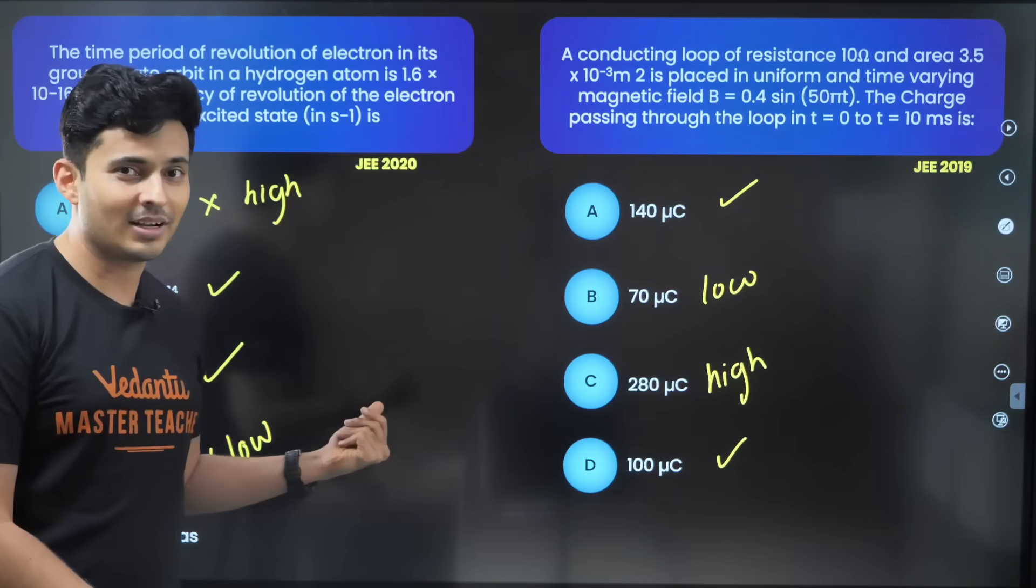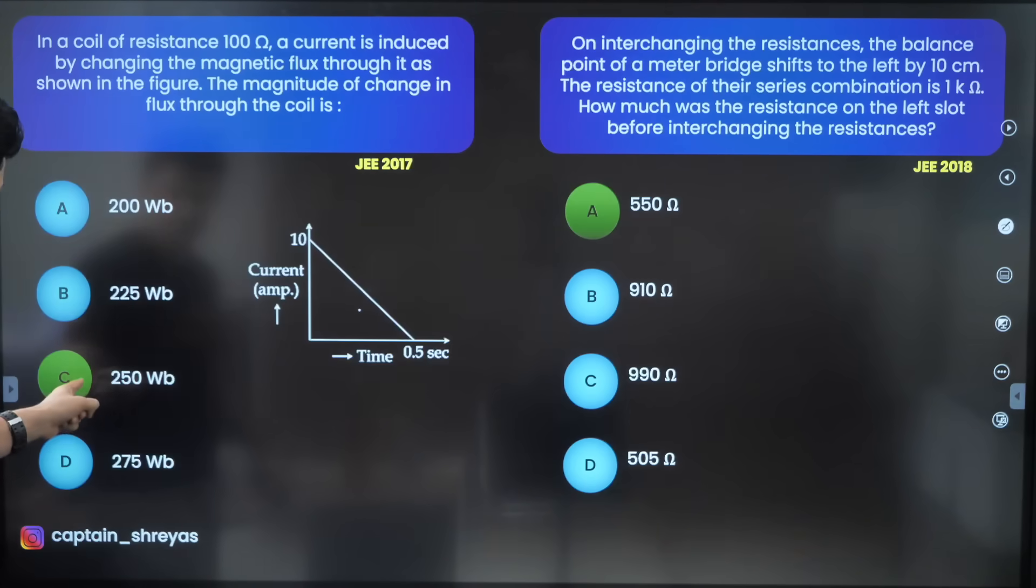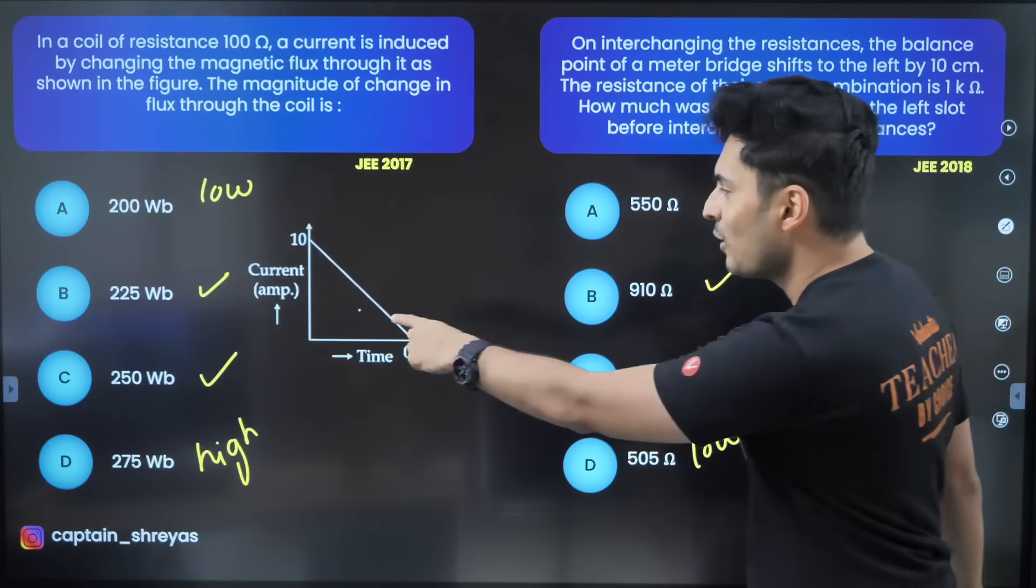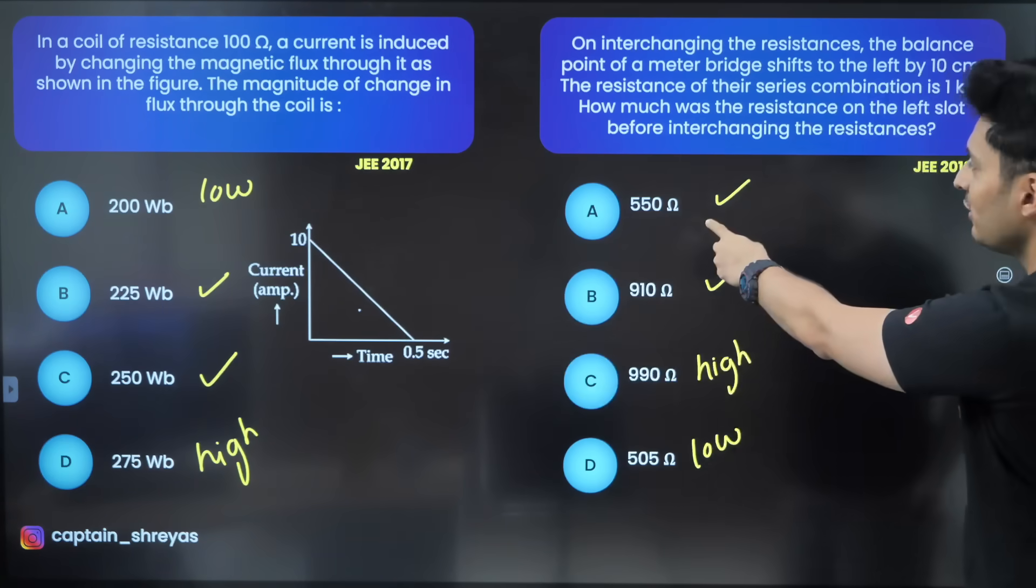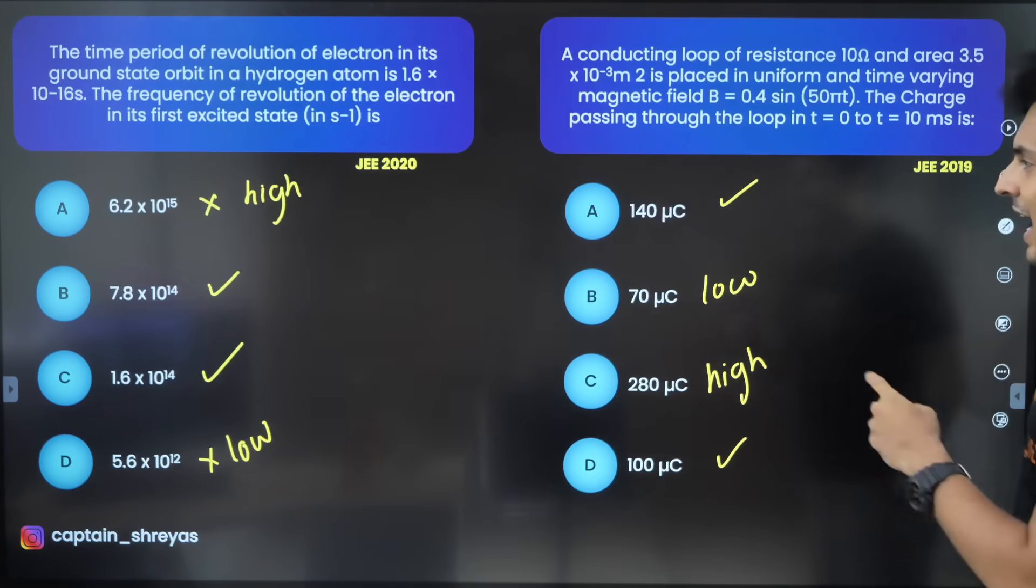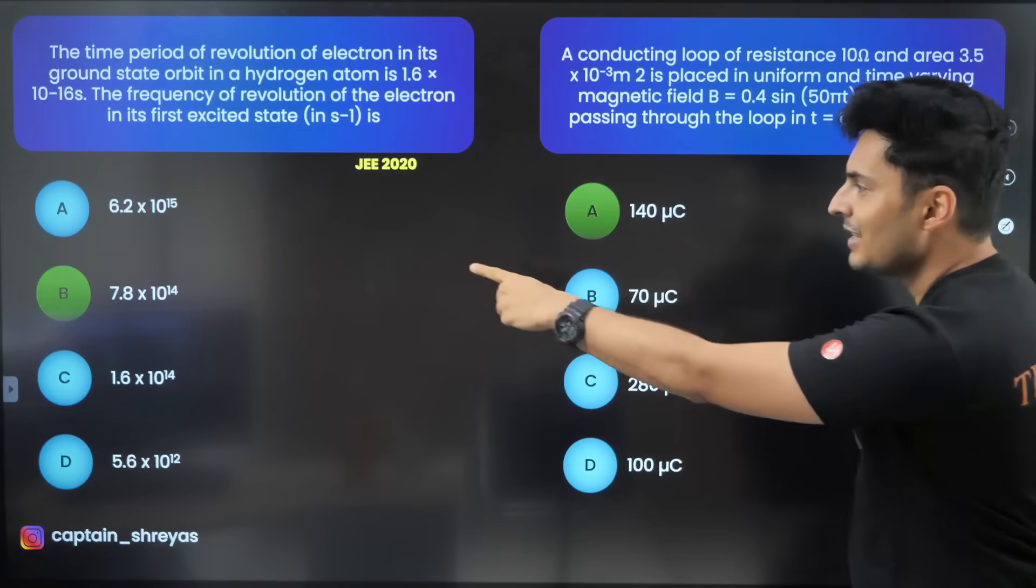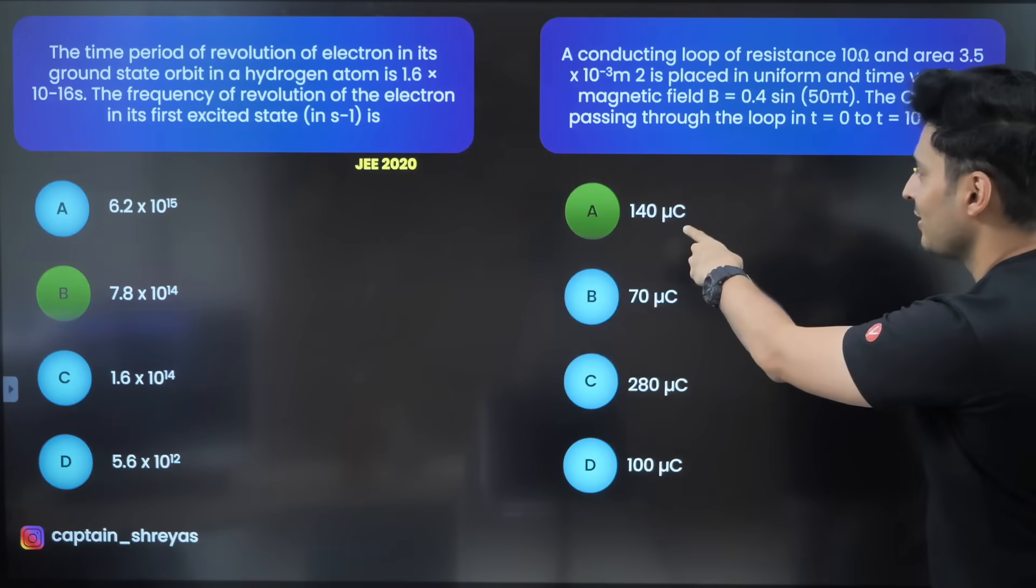So let's see what's the correct answer starting with question one, look at this 250, this is 550. If you remember correctly 250 was one of our guesses and 550 was also one of our guesses.